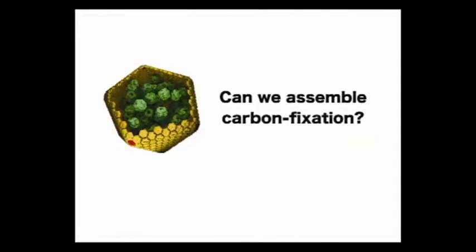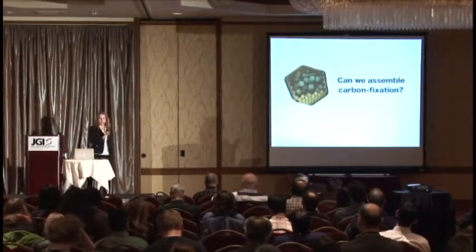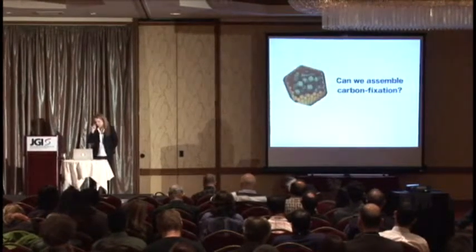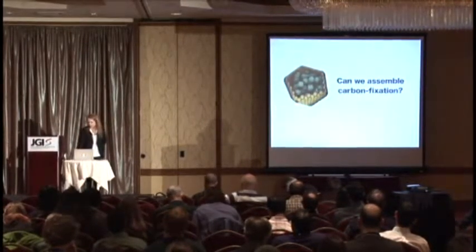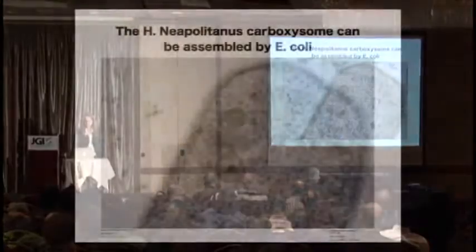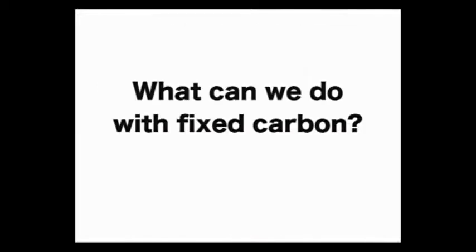We wondered whether we could assemble carboxylsomes in organisms that don't normally fix carbon, as a way to transfer carbon fixation from one organism to another. We took an operon that encodes all the proteins of the carboxylsome, expressed it in E. coli, and we see structures that look like carboxylsomes — and in fact they will fix carbon, though you have to do a few tricks to get that to happen.